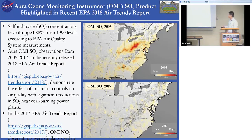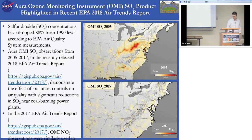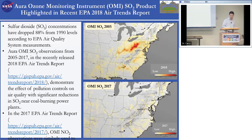This OMI-observed large reduction in SO2 over the eastern US was also recently highlighted by the US EPA in their 2018 Air Trends report — it's not very often that satellite data is featured in EPA documents.